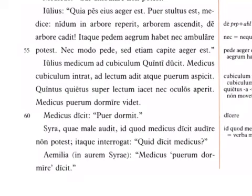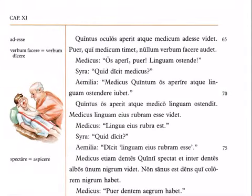So Syra asks: Quid dicit medicus? What is the doctor saying? Aemilia says into Syra's ear: Medicus puerum dormire dicit — the doctor says the boy is sleeping. Quintus oculos aperit atque medicum adesse videt — Quintus opens his eyes and sees that the doctor is present. Literally it's another accusative-infinitive indirect statement: sees the doctor (accusative) to be present (adesse infinitive). Abesse means 'to be away,' adesse means 'to be present.' So he opens his eyes and sees the doctor is present.